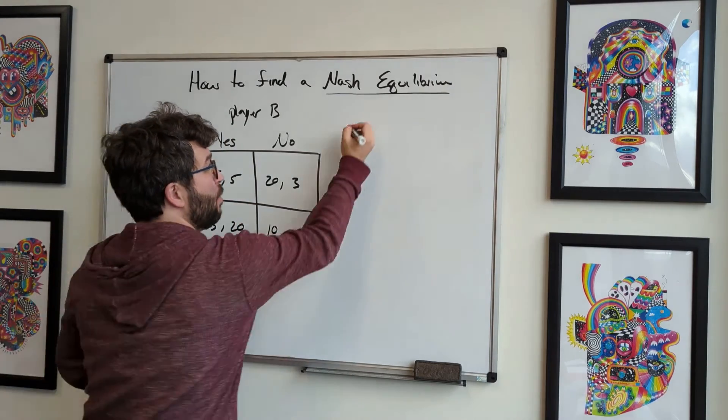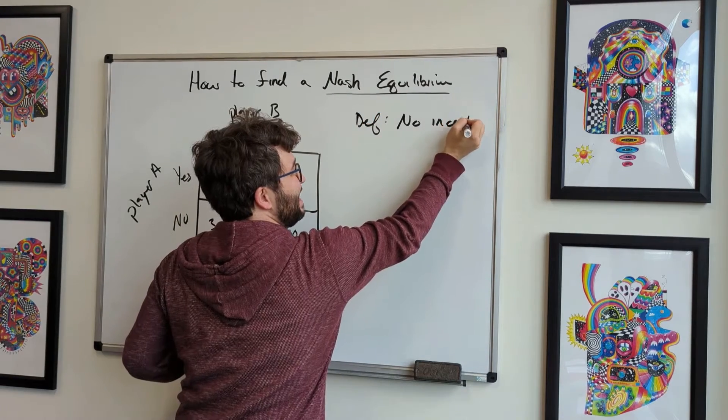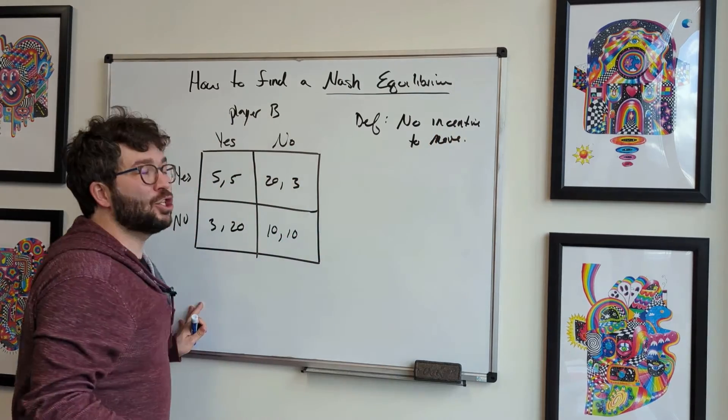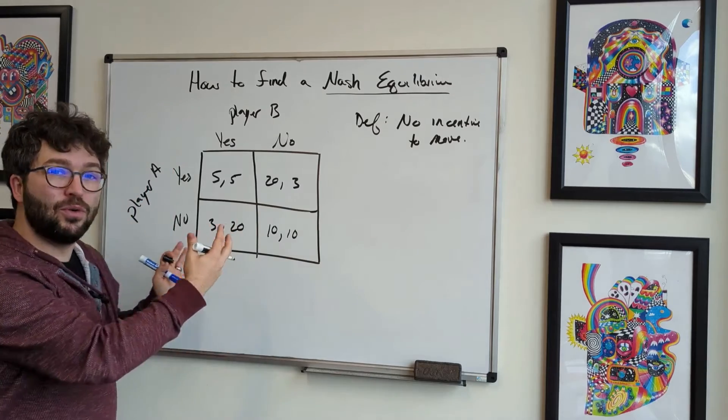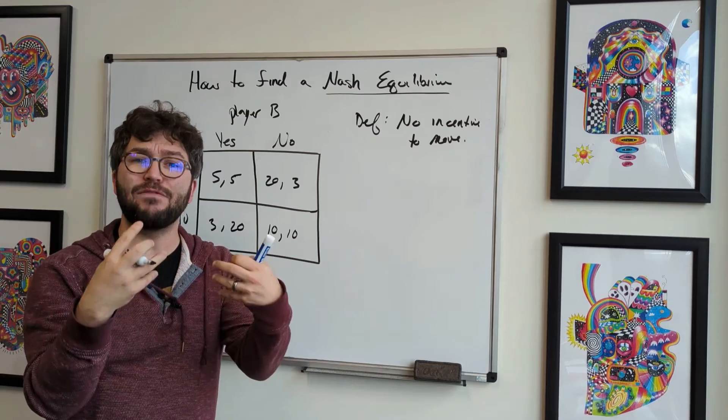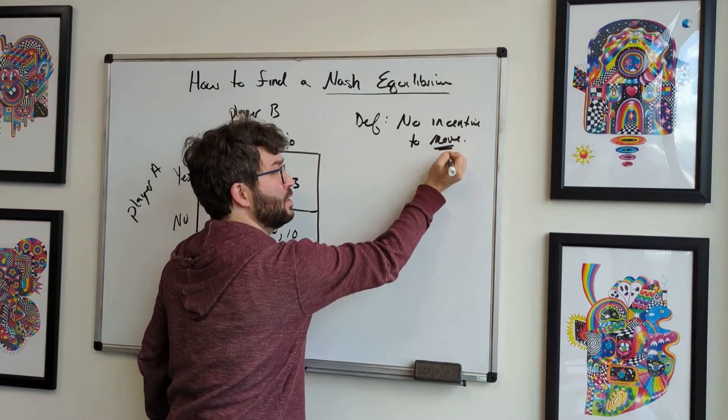By definition, what's the definition of my Nash equilibrium? No incentive to move. By definition of Nash equilibrium, we've got multiple players. In this case, we have two, and whatever they have landed on choosing their strategies, now knowing that, they have no incentive to change their strategies. They have no incentive to move elsewhere.